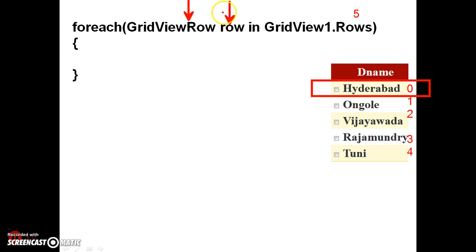So here, the row comes with DID_1, Hyderabad. In that row, we have to catch the checkbox control and check whether the checkbox is checked or not. If the checkbox is checked, then we have to catch the DID of Hyderabad, and then we need to insert that DID and SV number into the bus destination table.